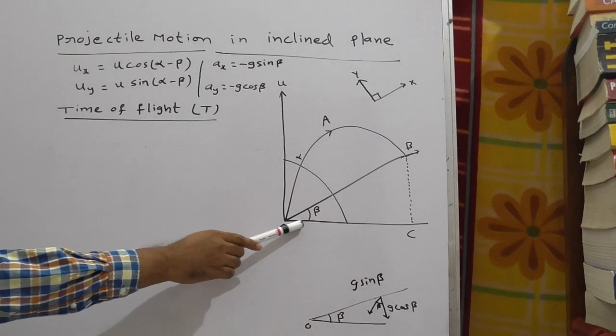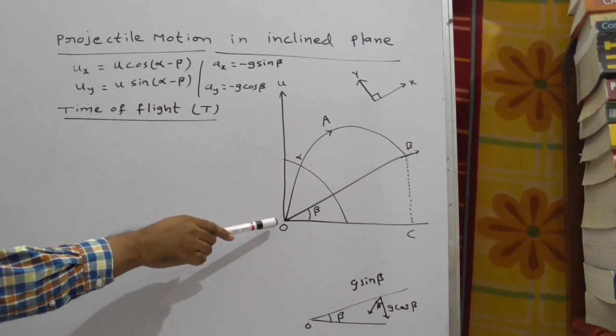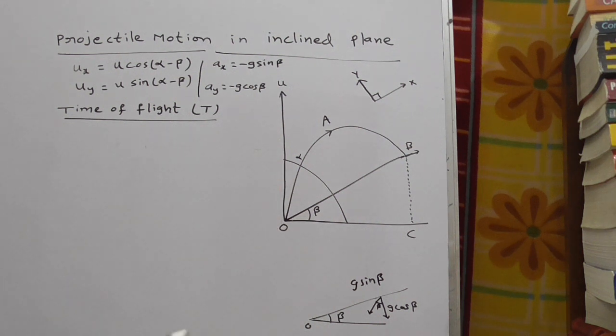This is x-axis. This OB line is inclined plane, making some beta angle with horizontal line.